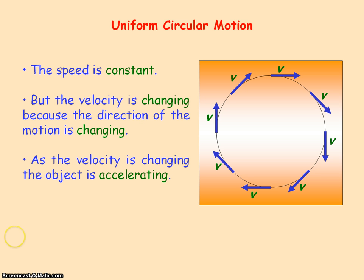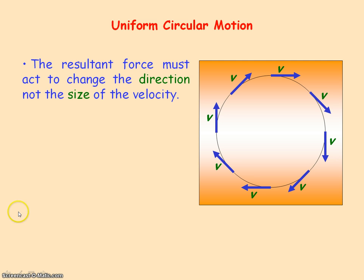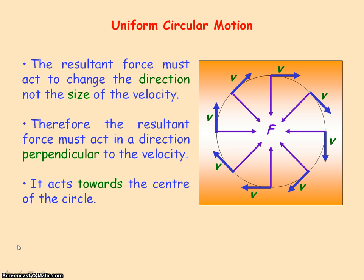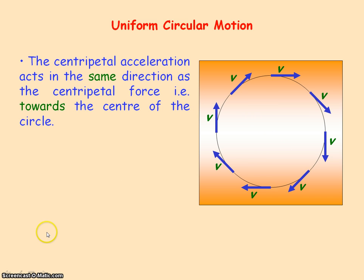For an object to be accelerating there must be a resultant force acting on it. The resultant force must act to change the direction, not the size, of the velocity, because the size of the velocity represents the speed which is constant. So the resultant force must act in a direction perpendicular to the velocity — that is, towards the centre of the circle. This resultant force is called a centripetal force; it's the force that gives rise to circular motion.